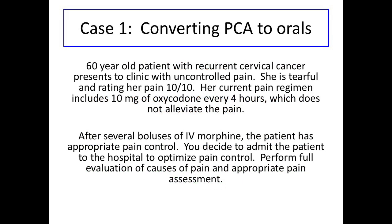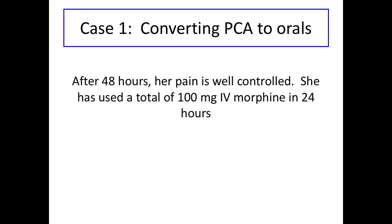Our first case involves converting a PCA to oral opioid medications. A 60-year-old patient with recurrent cervical cancer presents to clinic with uncontrolled pain, rating her pain 10 out of 10. After several boluses of IV morphine, the patient has appropriate pain control. She is admitted to the hospital to optimize her pain regimen. After 48 hours, her pain is well-controlled and she has used a total of 100 mg of IV morphine in 24 hours. We will now convert this to a home-going oral medication regimen.